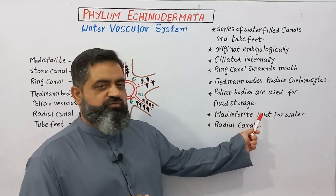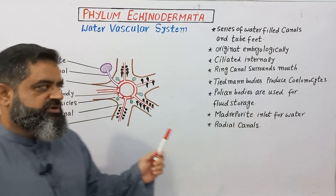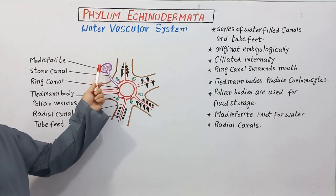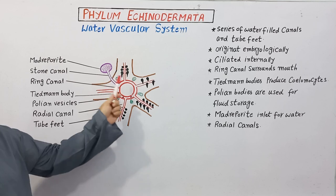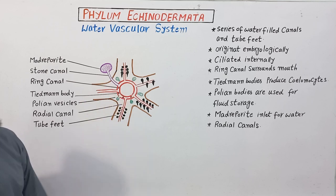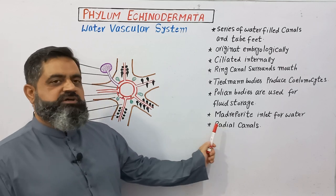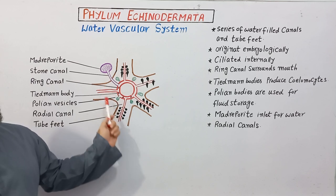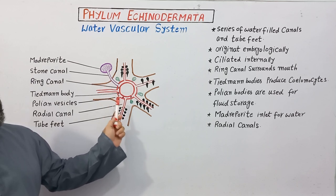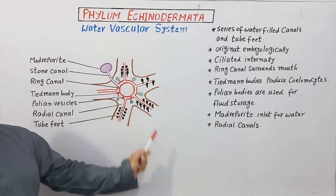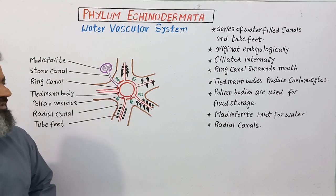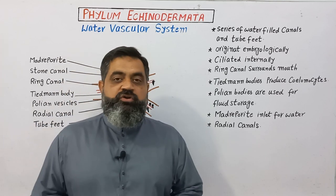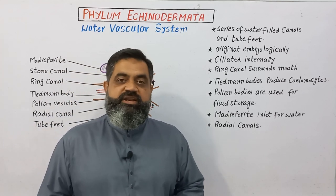The madreporite is the inlet for water — it is a sieve-like structure which allows water to pass through into the water vascular system. The radial canals originate from the ring canal and extend throughout the length of each arm of the sea star. That's all for today; see you in the next lecture.